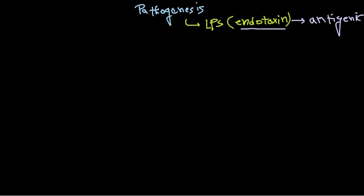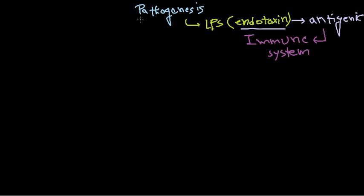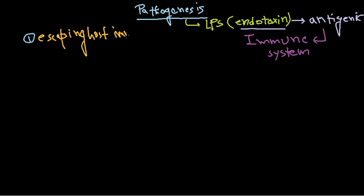As Salmonella is antigenic, it can trigger our immune system cells. Immune system cells like macrophages, neutrophils, and other phagocytic cells will come and try to engulf the bacteria. For a successful infection, a pathogen must accomplish two things: escaping host immunity and destruction of host cells.